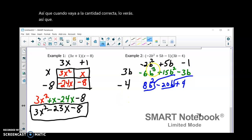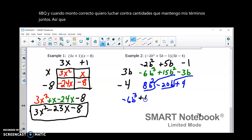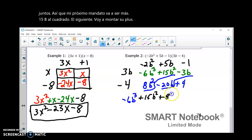My first term is negative 6B cubed. Now, when I write them out, I want to write them out so that I keep my like terms together. So, my next term is going to be plus 15B squared. The next one I'm going to write is plus 8B squared. I just want to keep them together.